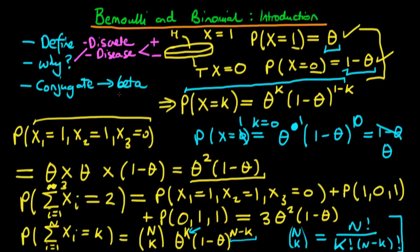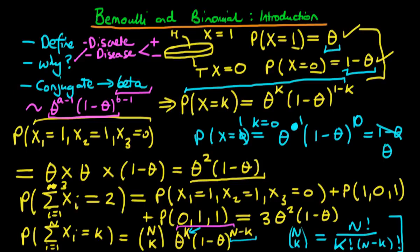Finally, I want to quickly talk about the conjugate prior to these likelihoods, known as the beta distribution, which we'll cover in the next video. The beta distribution has exactly the same functional form as both the binomial and Bernoulli cases: theta to the power a minus one times one minus theta to the power b minus one. Because it shares this form — theta to the power of something times one minus theta to the power of something else — when we multiply this prior through by the likelihood in the numerator of Bayes' formula, we get a posterior density of the same form as the prior. Hence the beta distribution is conjugate to both the binomial and Bernoulli distributions.